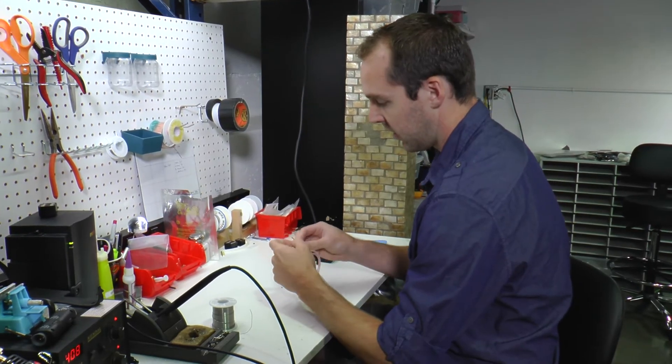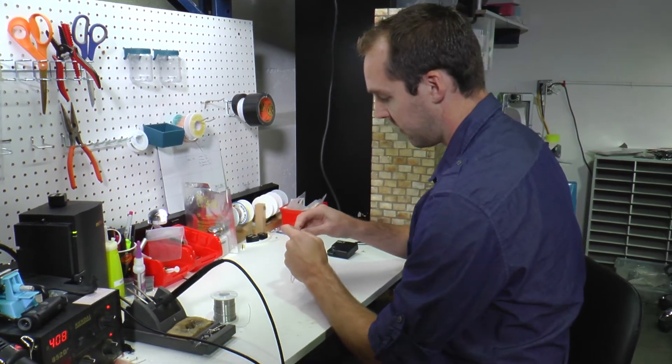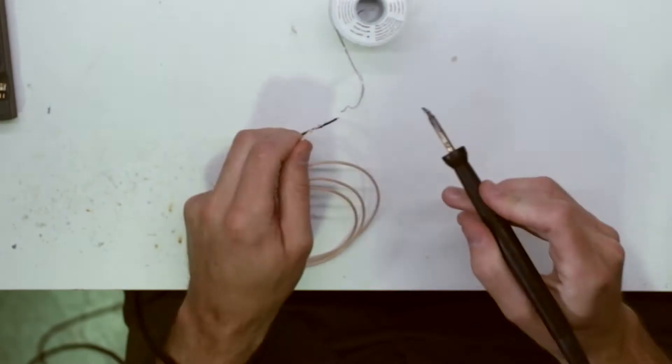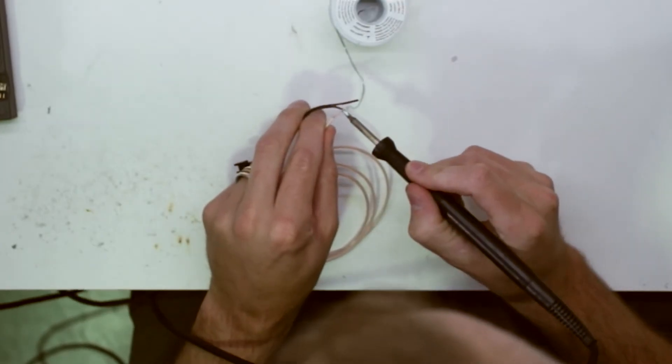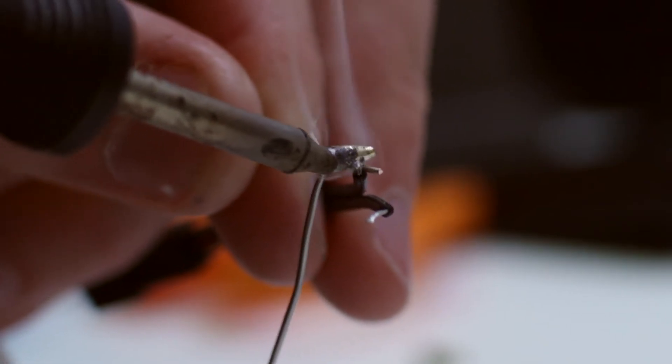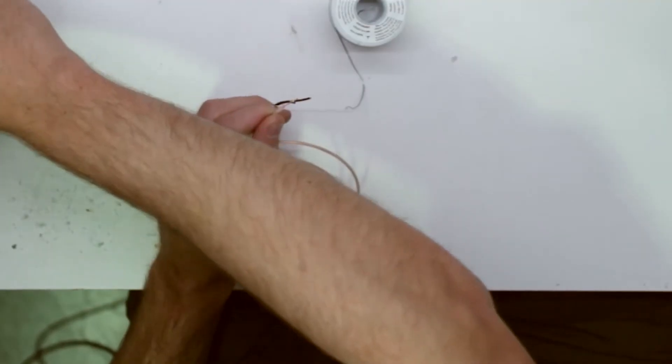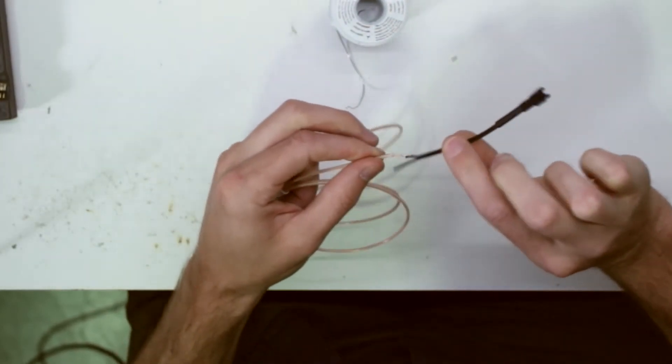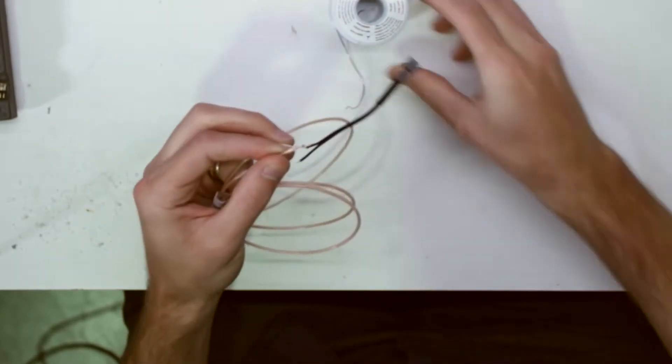Wrap the shorter lead around the wire and hold it in place. Take your solder and simply just touch it together to form a nice connection. At this point it should be pretty solid.